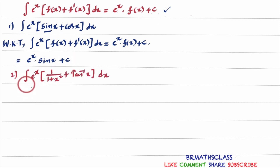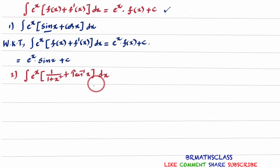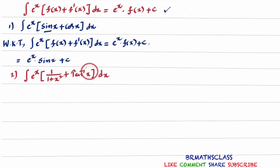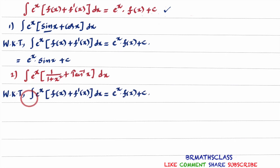Now see how to calculate the next integral. The integral is of the form f(x) plus f'(x) dx. We need to identify which one is f(x) and which one is f'(x). In the differentiation chapter, we know the derivative of tan⁻¹x is 1 divided by 1 plus x². The formula: integral of eˣ into f(x) plus f'(x) dx equals eˣ into f(x) plus c.